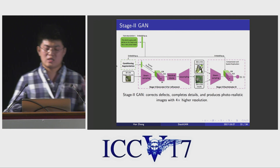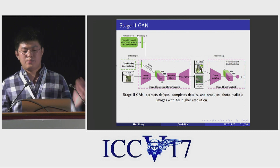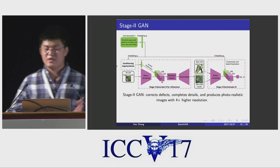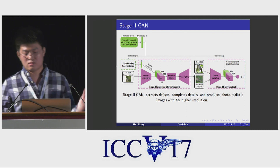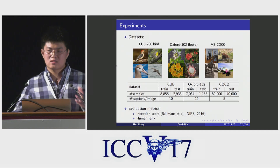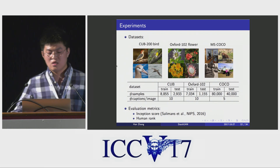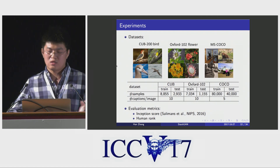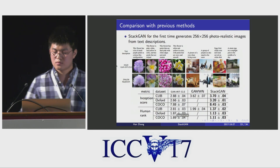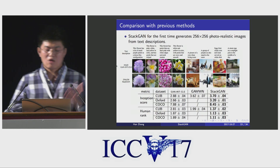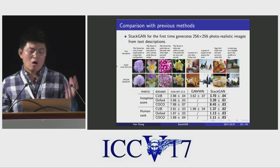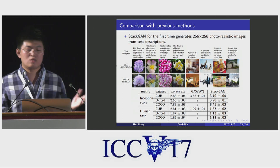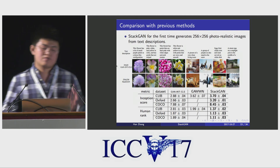In the end, the Stage 2 GAN is able to correct defects, complete details, and produce photorealistic images with four times higher resolution. We validate our StackGAN on text-to-image generation on three benchmark datasets, adopting inception score and human rank as evaluation metrics. Our Stage 2 GAN achieves state-of-the-art results for all three datasets, and for the first time generates 256x256 images from text descriptions.